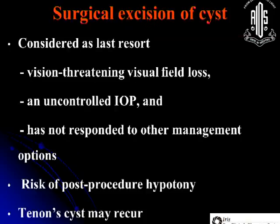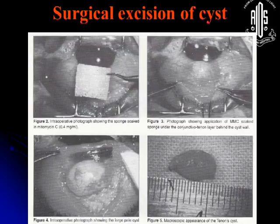Surgical excision of cysts should be considered the last resort when there is vision-threatening visual field loss, uncontrolled IOP, and no response to other treatments — but there is a risk of post-operative hypotony and Tenon's cysts can still recur. Referring to Dr. Mandel's article: you cut the conjunctiva at the same site as your previous incision, undermine the conjunctiva, identify the cyst, apply a mitomycin pledget all around, then cut it — and this is what the Tenon's cyst looks like.